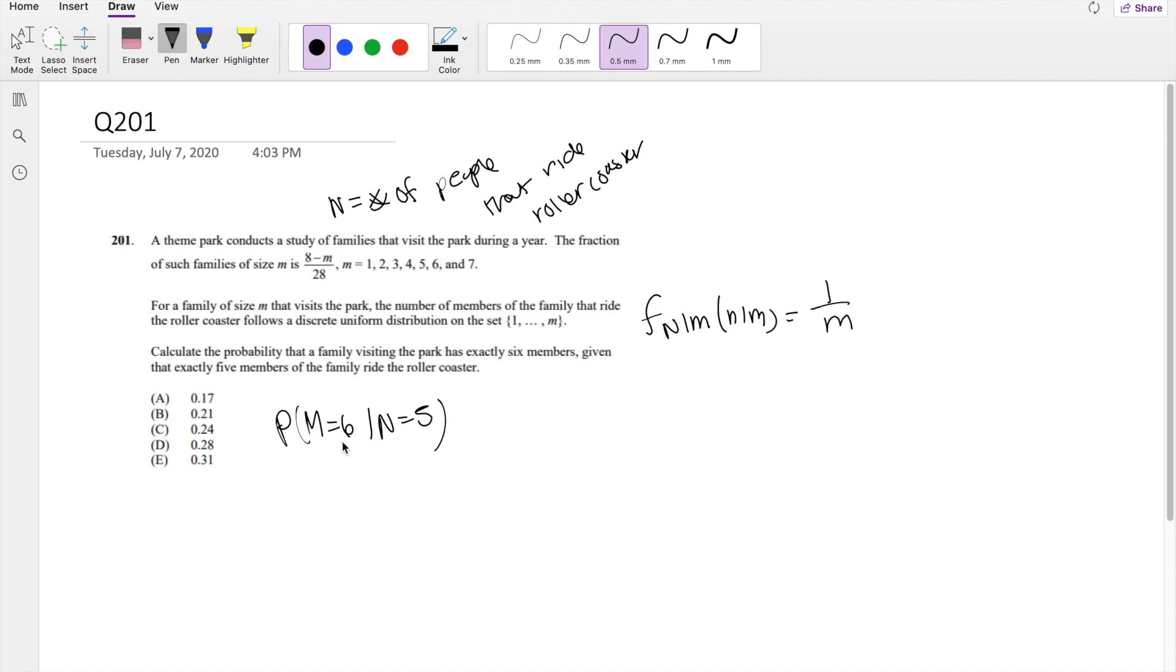But then the thing is, they give you the probability, we're looking for a probability that's m given n, which is the opposite of this. So that's a good sign that you have to use the Bayes theorem.